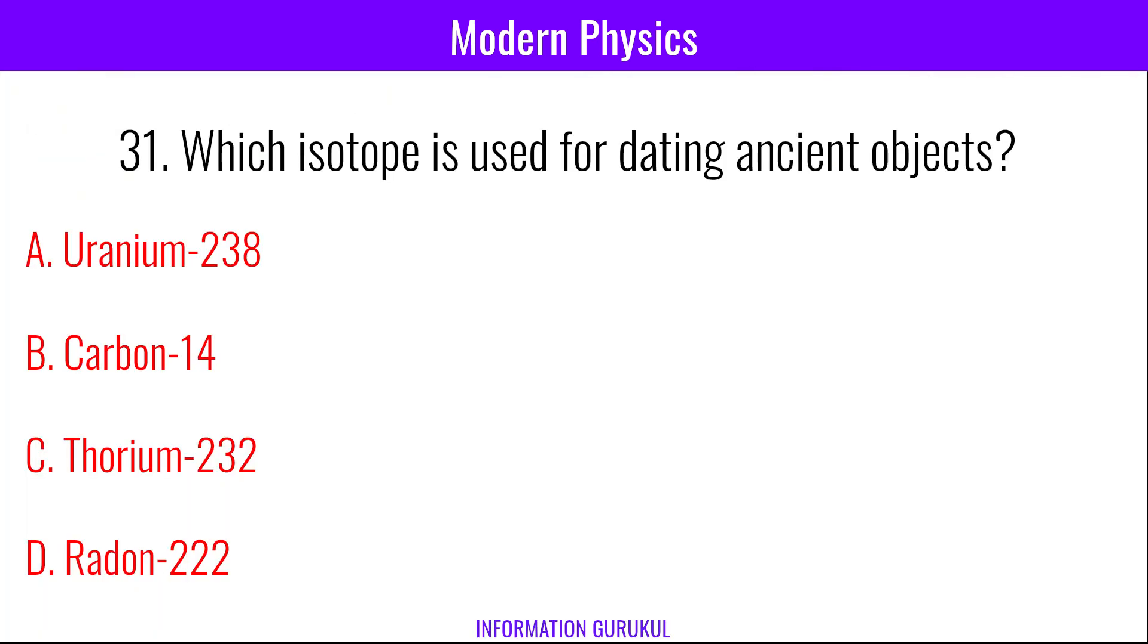Which isotope is used for dating ancient objects? Carbon-14.